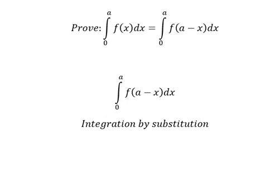So I will set u equals to a minus x. Later, we need to take the first derivative for both sides. This one we have 1.